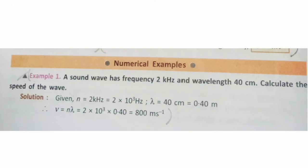Numerical example 1: A sound wave has a frequency of 2 kHz and wavelength 40 cm. Calculate the speed of the wave. Using V = nλ, we convert 2 kHz to 2000 Hz and 40 cm to 0.4 m. Multiplying gives V = 2000 × 0.4 = 800 m/s. We convert to SI units to keep the system consistent.